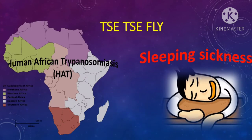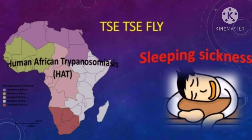After the sand fly, we will learn about the tsetse fly, which causes human African trypanosomiasis, also known as sleeping sickness, because the affected person tends to sleep excessively. Since the tsetse fly is found only in sub-Saharan Africa, the disease is called human African trypanosomiasis. It is caused by microscopic parasites of the species Trypanosoma brucei.